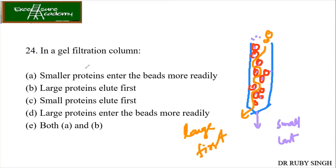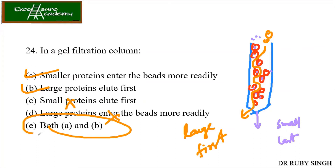Looking at the options: smaller proteins enter the beads more readily — yes, true. Large proteins elute out first — yes, also true. Small proteins elute first — no, this is wrong. Larger proteins do not enter the beads — yes, correct. So options A and B are both correct, and we mark option E — all of the above for A and B.